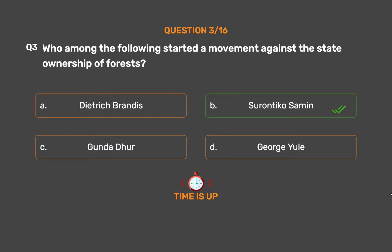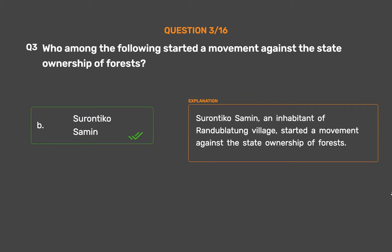The correct answer is Option B, Surontikosameen. Surontikosameen, an inhabitant of Randeblatunk village, started a movement against the state ownership of forests.